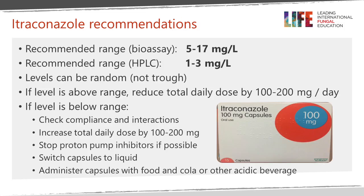The recommended bioassay range is between 5 and 17, and by HPLC it's 1 to 3; mass spec would give the same as HPLC. Because the half-life is long, levels can be measured at any point after steady state — there's no need to specifically measure trough or peak levels. If levels are above range, the total daily dose should be reduced by 100 or 200 mg/day. If below range, compliance and drug interactions need to be checked, and the dose can be increased. Stopping PPIs, ranitidine, or cimetidine, taking capsules with food or acidic beverages, or switching from capsules to liquid can also solve low blood levels.